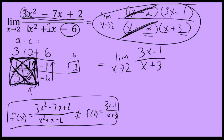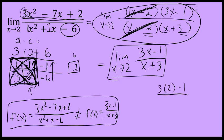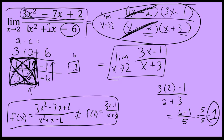Once you eliminate the x minus 2 factors, the limit as x approaches 2 of 3x minus 1 over x plus 3 can be evaluated by direct substitution. Substituting 2 for x: 3 times 2 is 6 in the numerator, and 2 plus 3 is 5 in the denominator. 5 over 5 equals 1. Therefore, the limit as x approaches 2 of 3x squared minus 7x plus 2 over x squared plus x minus 6 is equal to 1.